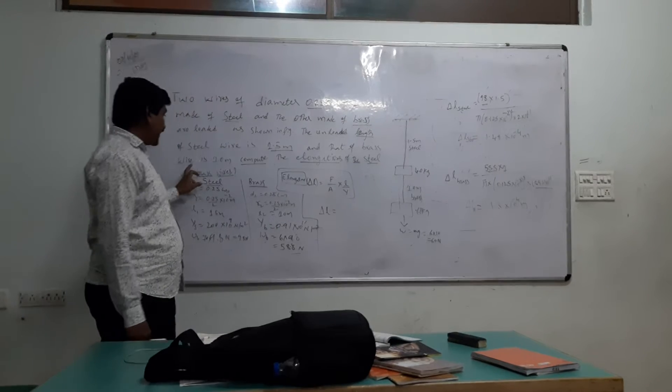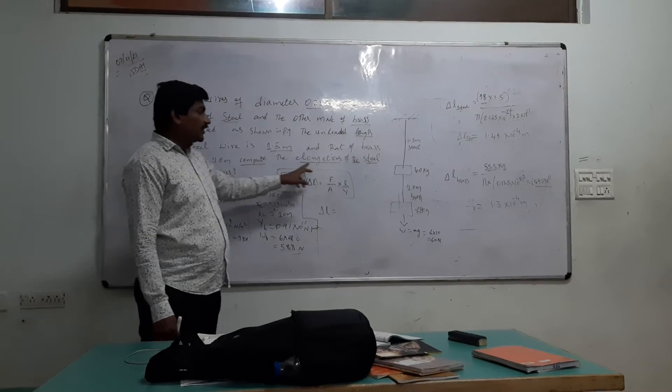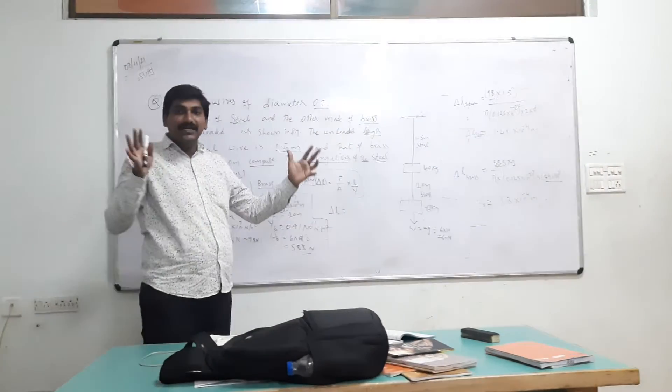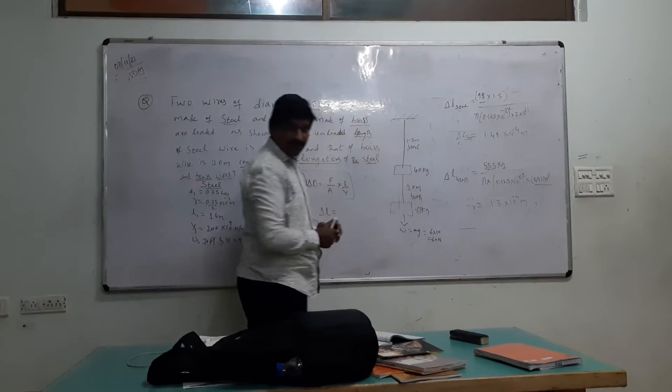The brass wire is 1 meter length. Compute the elongation of the steel and brass wires, how much elongated after being loaded this much.